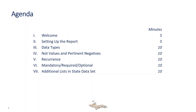We're going to start out by setting up a very simple report where we just count patient care reports for our agencies. Then we're going to consult the NEMSIS Data Dictionary to understand how to use all the different data elements available for reports. We'll go through data types, the concept of not values and pertinent negatives, the concept of recurrence, how to tell if elements are mandatory, required, or optional, and a few more things in the state data set that will help you build certain kinds of reports.